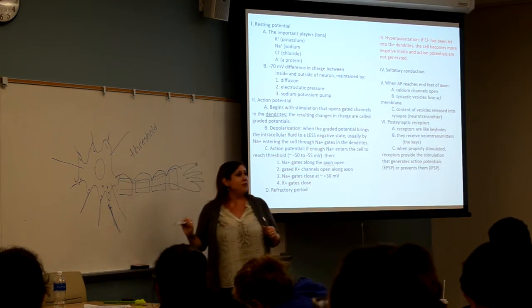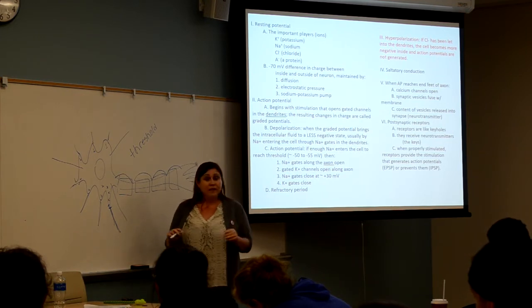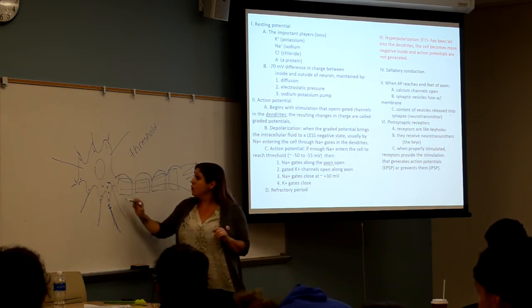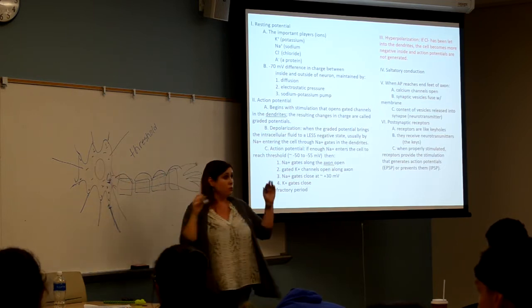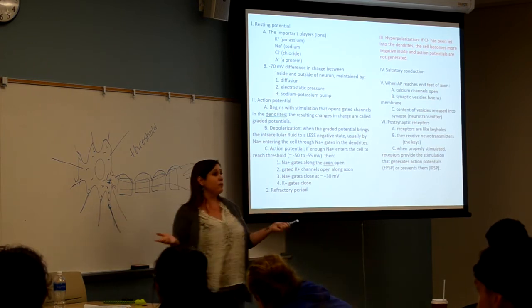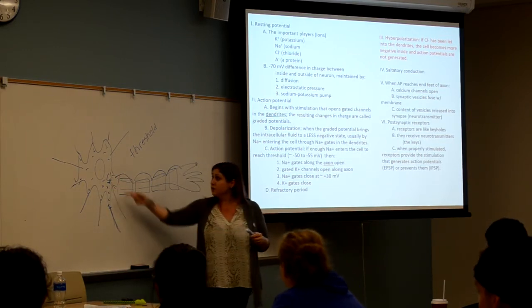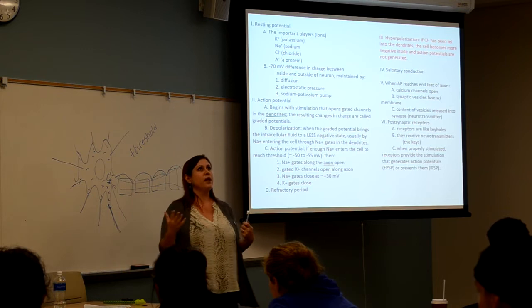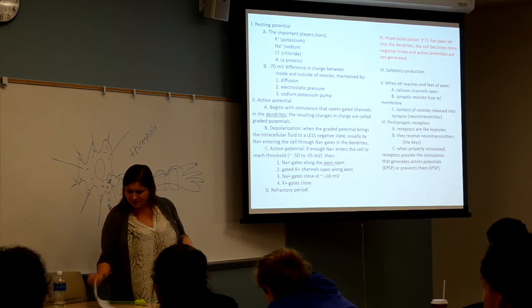But, there are other cells that might be talking to this cell too. And maybe these cells know that you've been drinking. When you've been drinking, and we'll talk about how this happens next time, it opens chloride gates and chloride comes in. Now, the cell gets more negative. When chloride comes in, the cell gets more negative. So, that's why you can't remember shit when you're drunk. Because you are having a hard time pushing your cells to action potential because the alcohol is making these chloride gates open. That's also why you like to pass out and die and stuff.